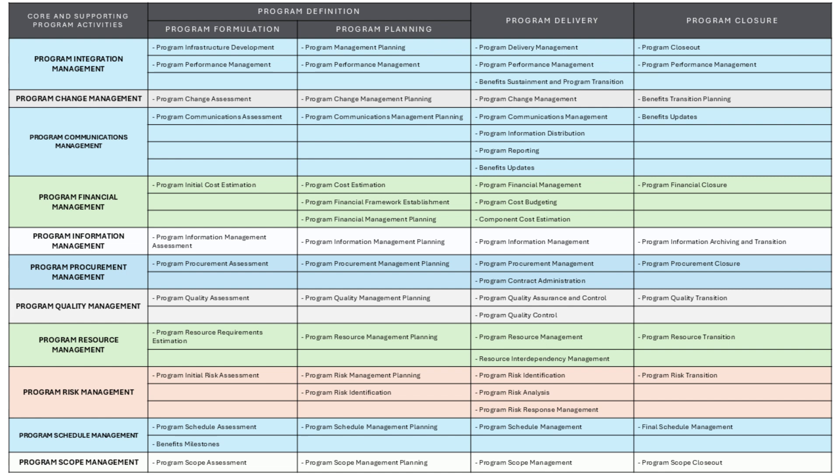Program management planning is the process of creating a detailed plan that outlines how the program will be managed, including governance structures, reporting methods, and performance measurement. Program delivery management is focused on managing the execution of the program's activities to deliver intended outcomes and benefits, ensuring that all projects and program components stay on track and aligned. Benefits sustainment and program transition ensures that once the program is delivered, the benefits are maintained, and the program's outputs are successfully transitioned into regular operations or to the next phase. The closeout phase ensures all program components are finalized, and performance is evaluated one last time to ensure that all objectives were met — this explains why performance management appears in multiple phases.